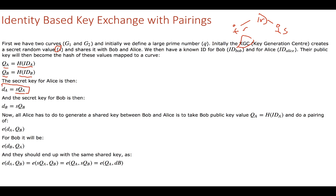These identity values are points — we hash the identity and then map it onto whichever curve is needed, hashing the point onto the curve. Alice's private key becomes S times QA, her identity as a point on the elliptic curve. Bob's secret key becomes S times his identity point. Alice then does a pairing of her secret key and Bob's public key, and Bob does the same with his secret key and Alice's public key.